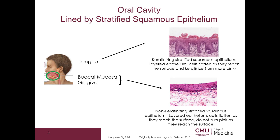This is a layered epithelium and the cells flatten as they reach the surface. They do not turn pink as they reach the surface — that means they are non-keratinizing. Please note the normal histology of the tongue and buccal mucosa is reviewed in a separate video.